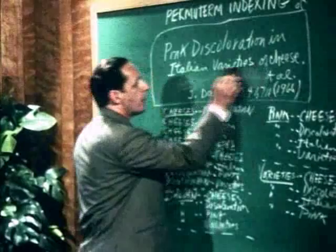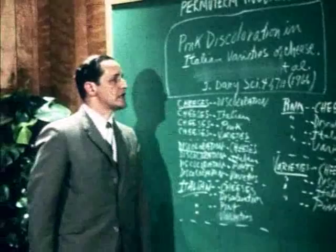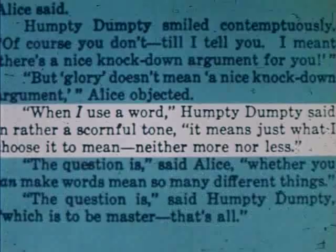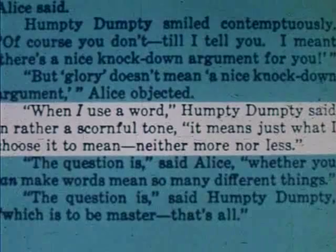The Permuterm Index is, of course, based on natural language — that is, the current terminology used by authors in their articles. Like Humpty Dumpty in Lewis Carroll's Through the Looking Glass, when a professional indexer uses a subject heading, he is really saying, 'When I use a word, it means just what I choose it to mean, neither more nor less.' This often leads to difficulty.